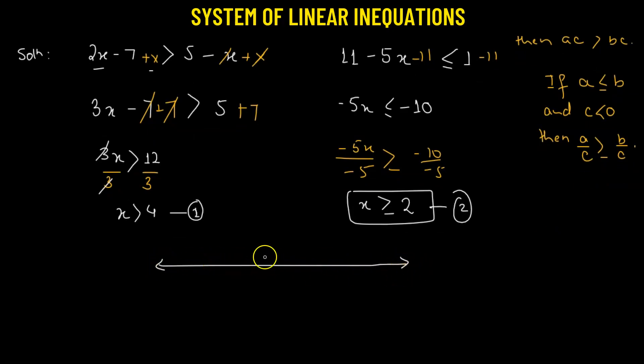We'll draw a number line and consider 2 and 4. x > 4 means we consider all values of x greater than 4, lying to the right of it and extending to positive infinity.